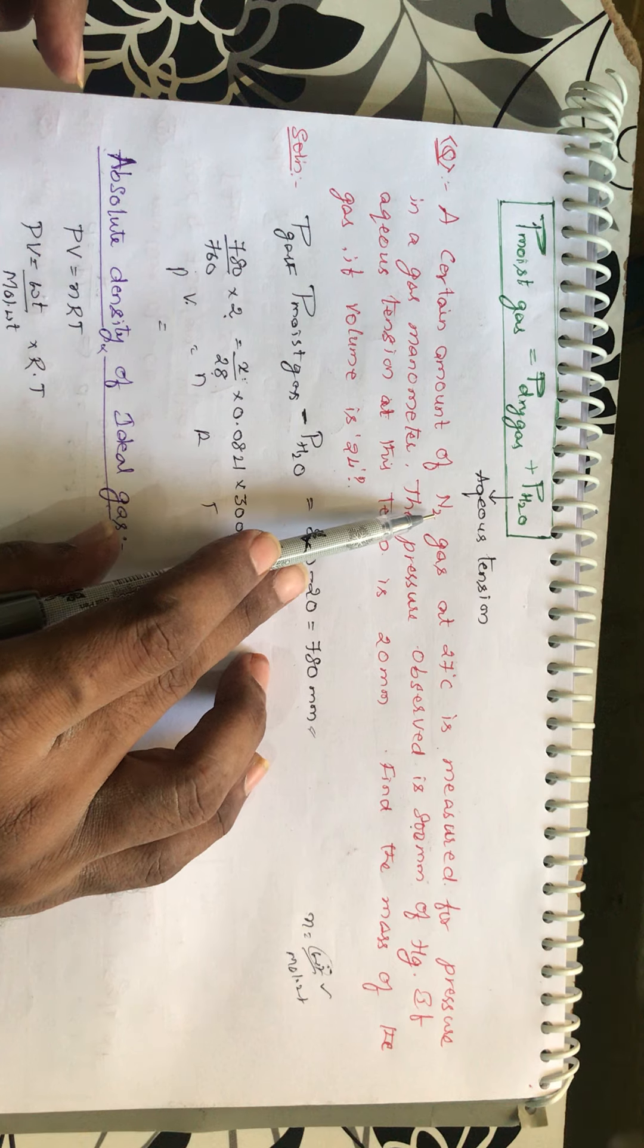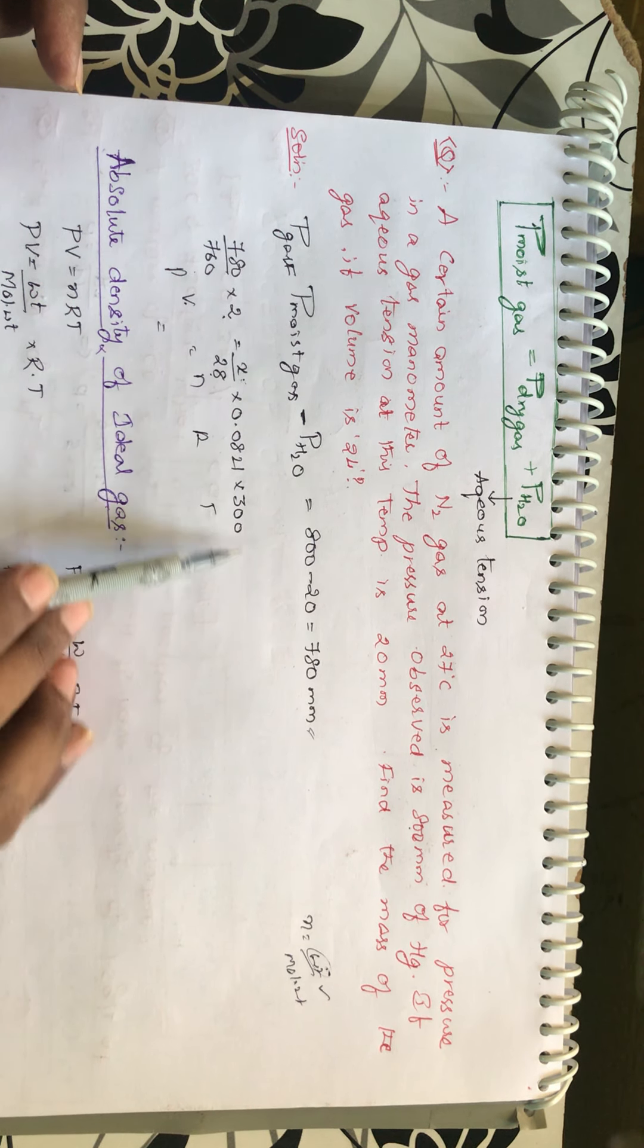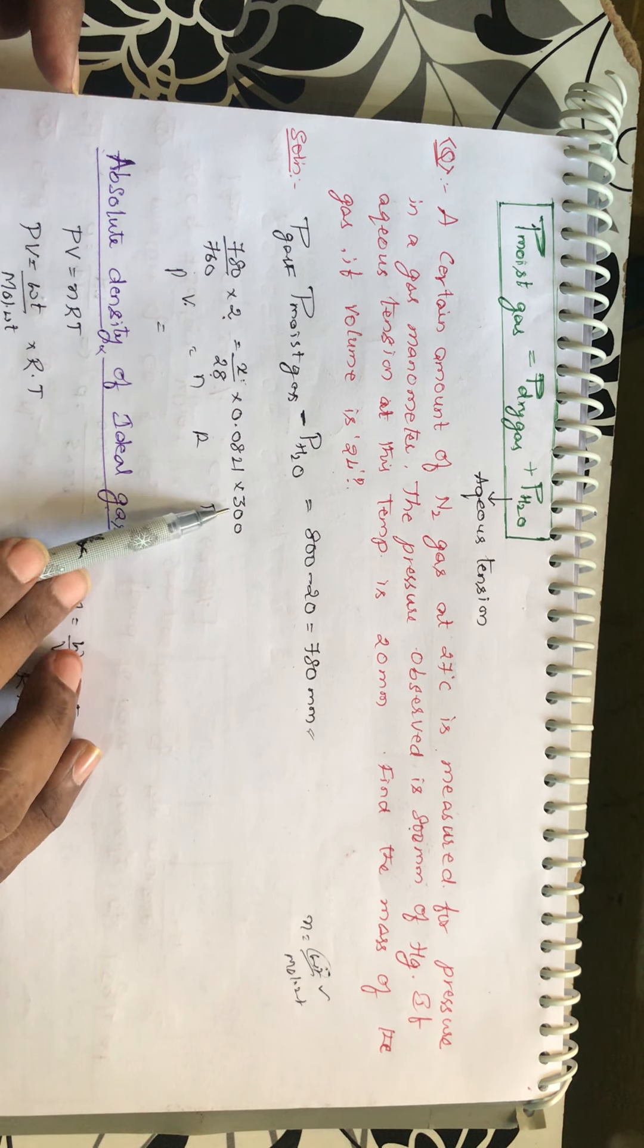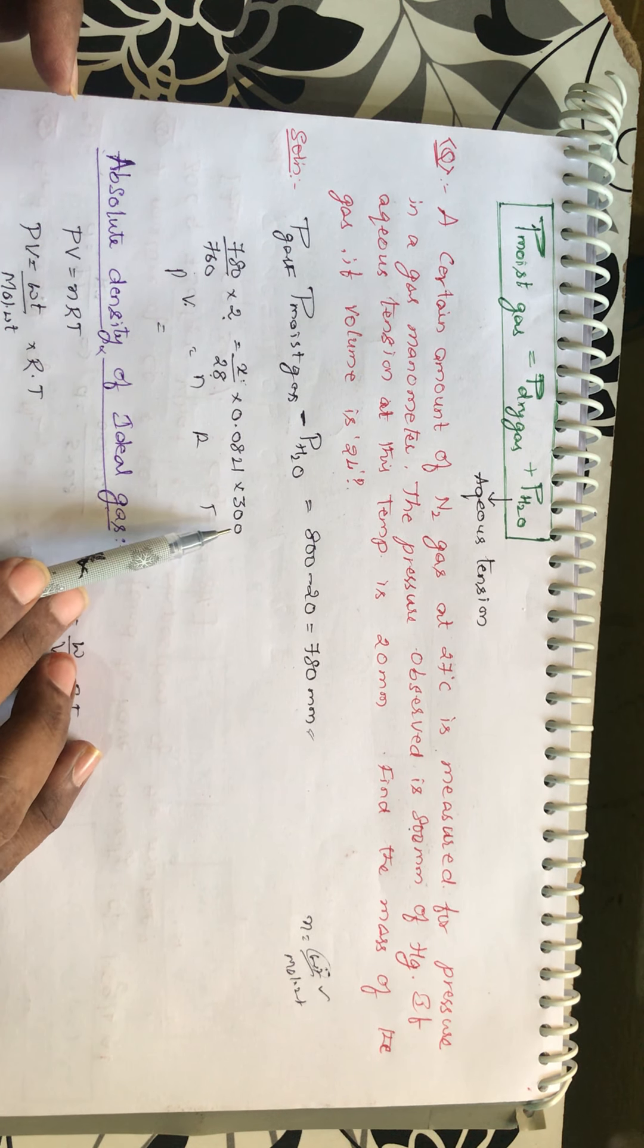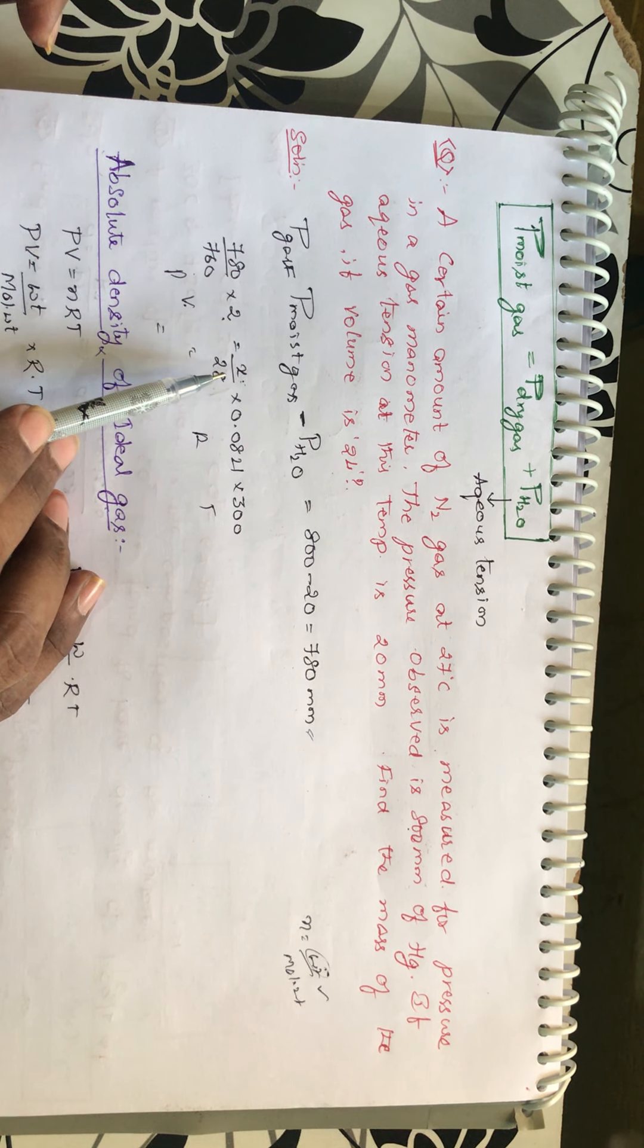N2 means the molecular weight of N2 is 28. R value is 0.0821. And temperature is 27 degrees centigrade. It has been converted into Kelvin, becomes 300. Now, based on these values, you calculate the value of X students.